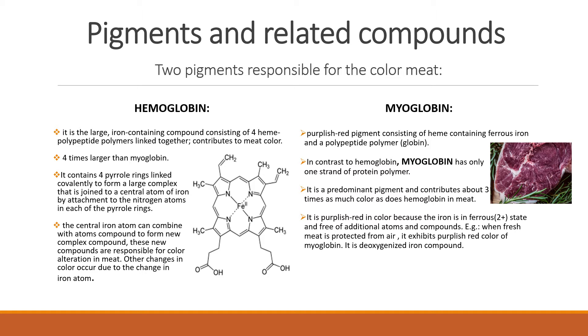Other changes in color occur due to the change in iron atom. In the figure, you can see the iron atom in the center of heme that can complex with other atoms or other compounds, and by doing that it forms a new compound.